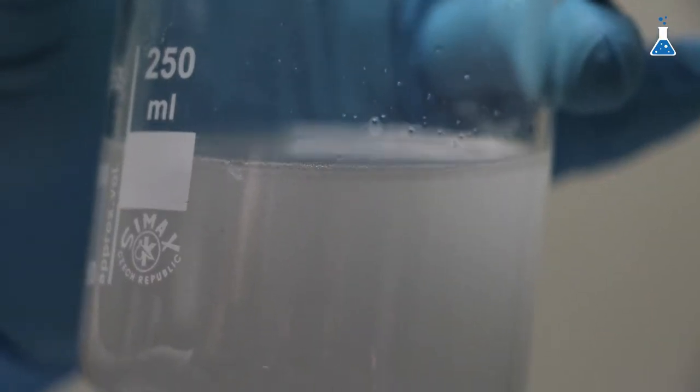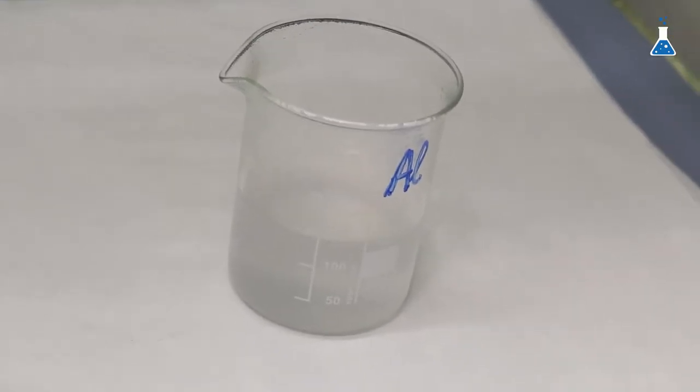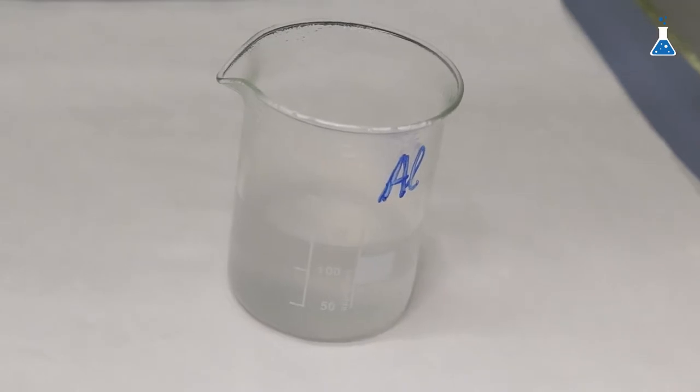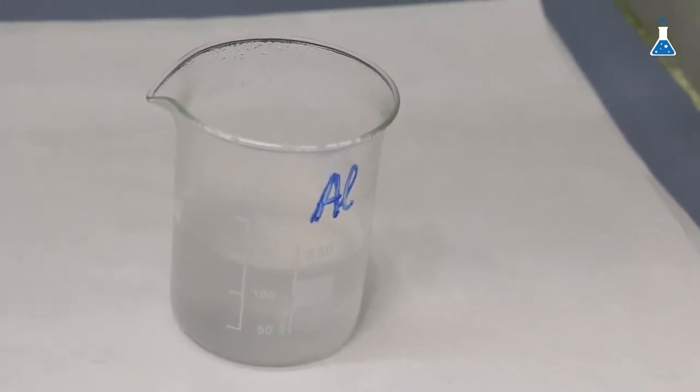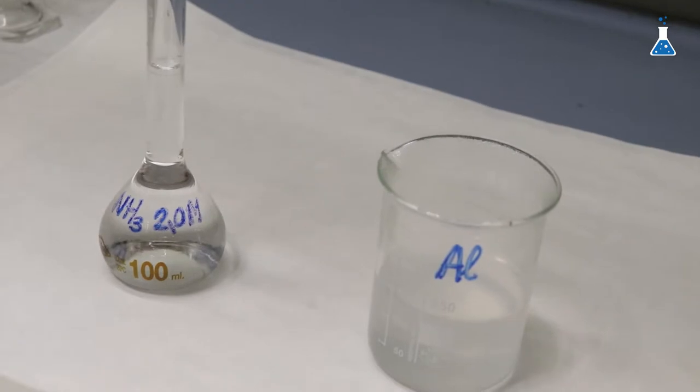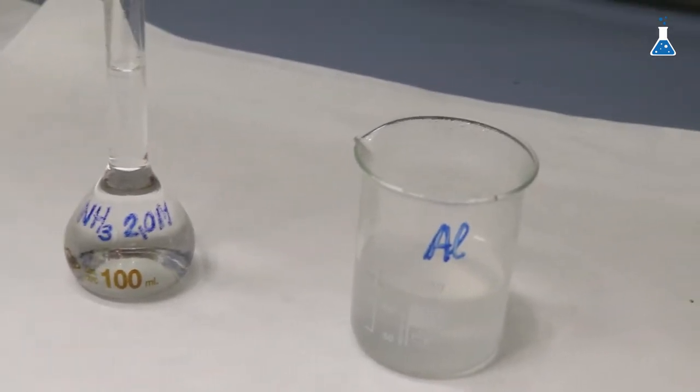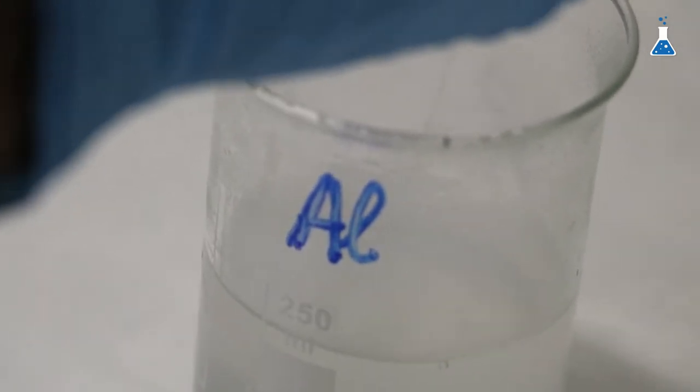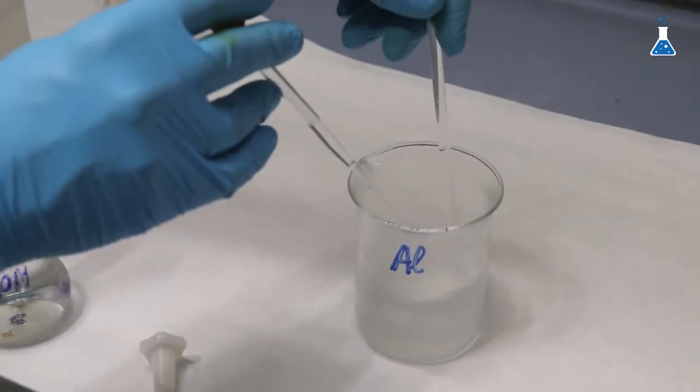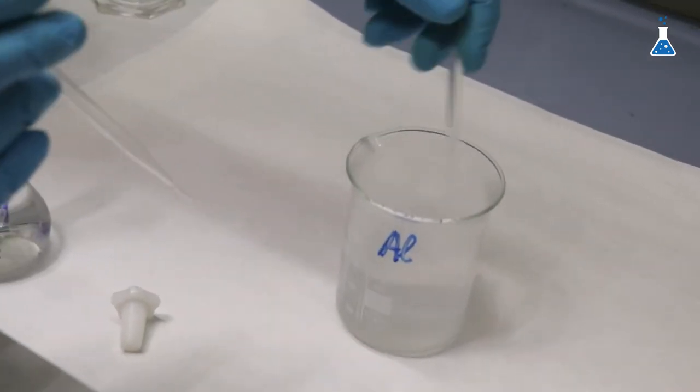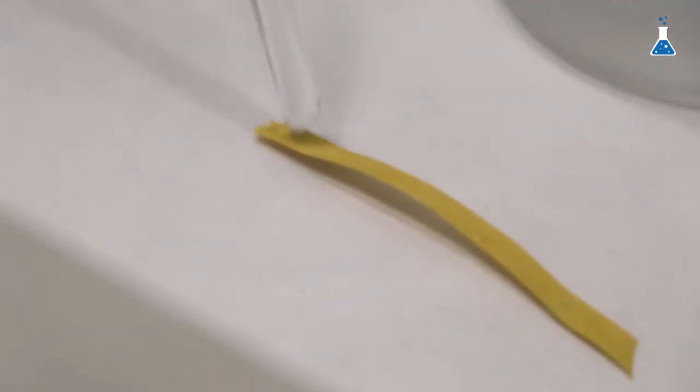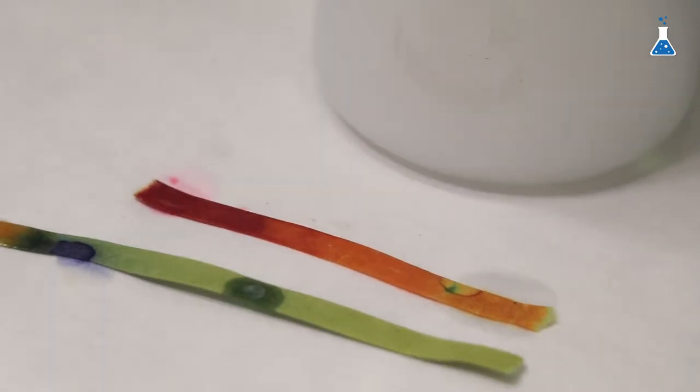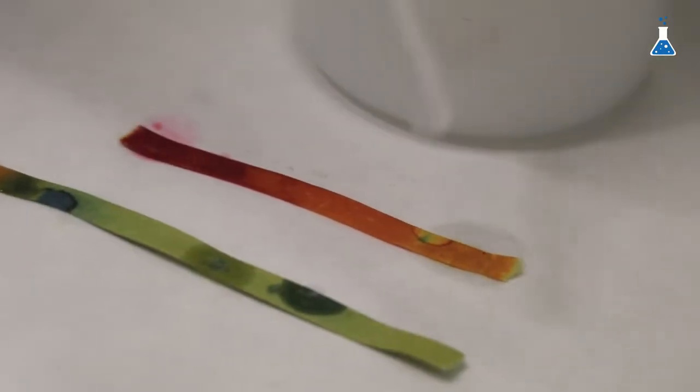As you can see from the effervescence form. So now we have aluminum dissolved in the solution and we increase the pH of the solution by adding some milliliters of 2.0 molar ammonia solution. As you can see, it starts to form a white solid, which is aluminum oxide hydrate. Let's continue adding more ammonia until we neutralize the solution. By simply checking the pH value with some pH strip, we can know when the solution is neutralized.